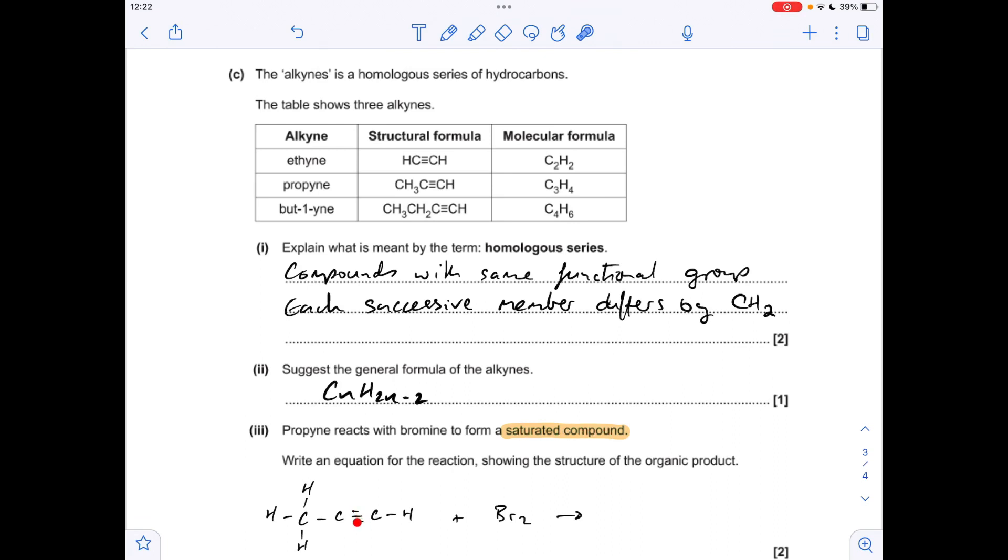So in other words, this triple bond is going to become a single bond, so we've got space around here for four Br's. So obviously it's going to react with two moles of Br2, and it's going to give us that as the product.